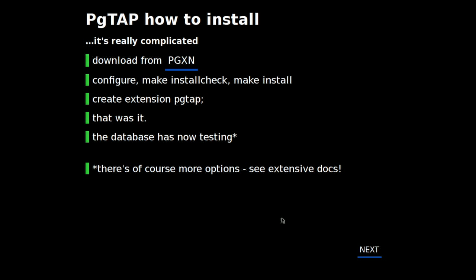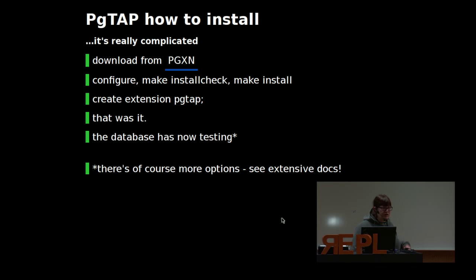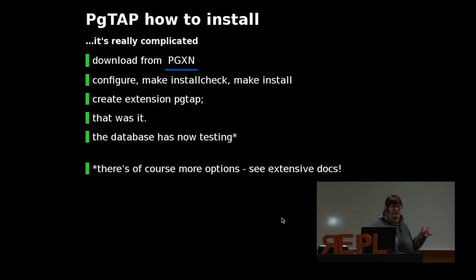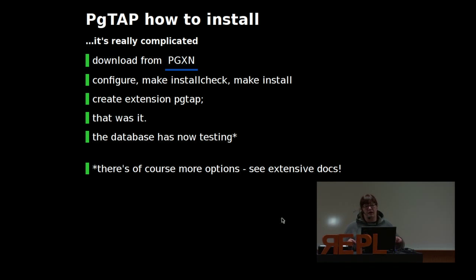How do you install pgTAP? It's a regular Postgres extension. You simply run make configure, make install check, make install, then type CREATE EXTENSION pgtap. That's basically it. It's tied to a specific database, so if you have more than one database you need to do it on all of them.